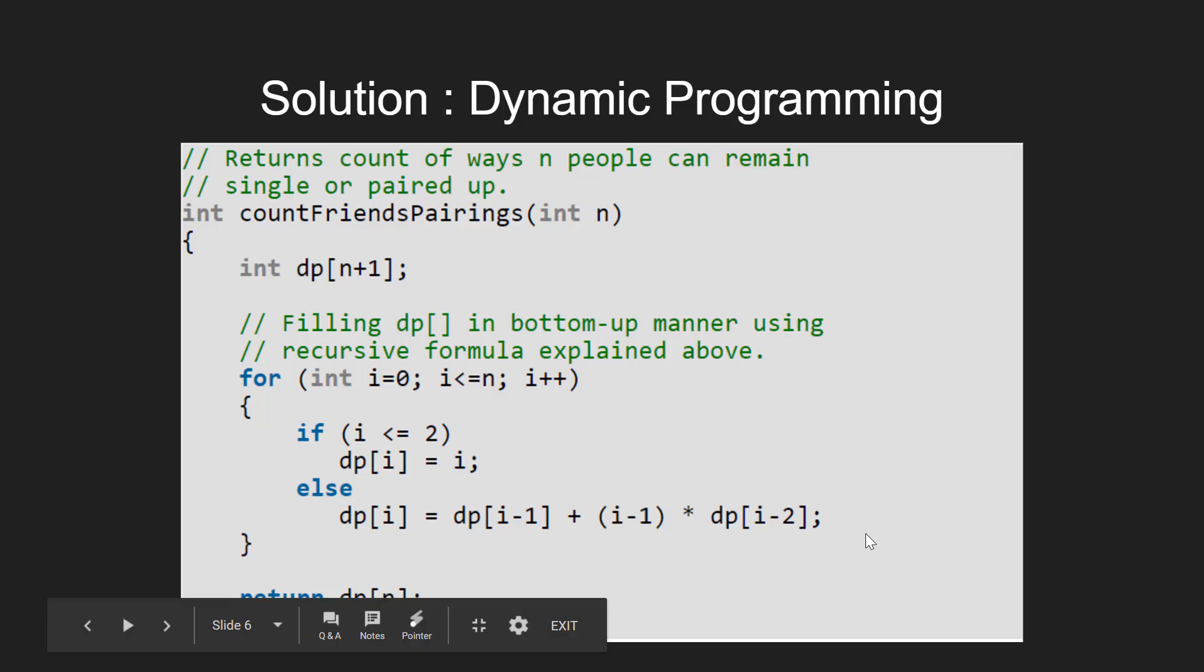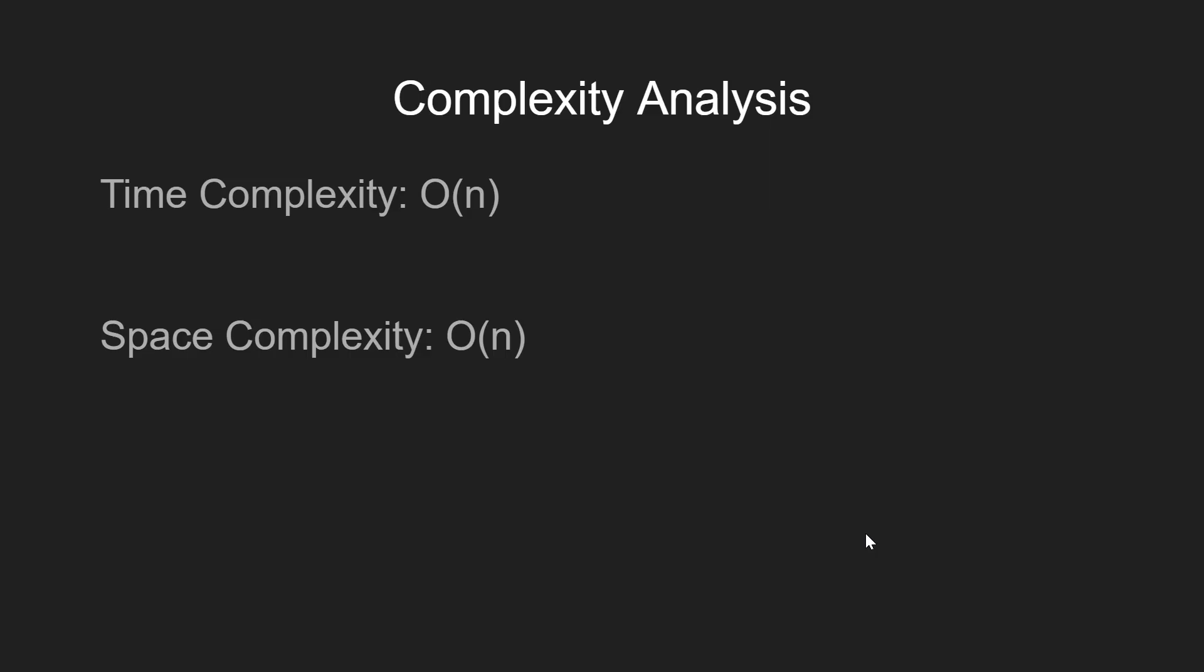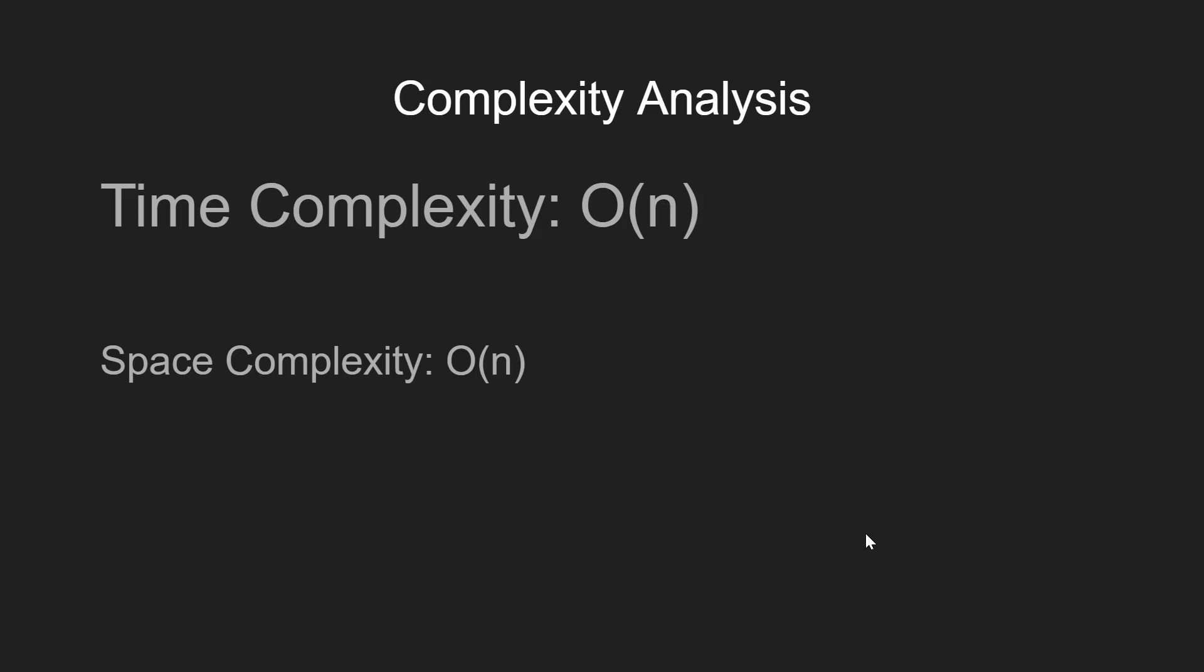Finally, we return dp[n] as the output. Looking at complexity analysis, for time complexity, we iterate for every value of i from 1 to n, giving us time complexity O(n).